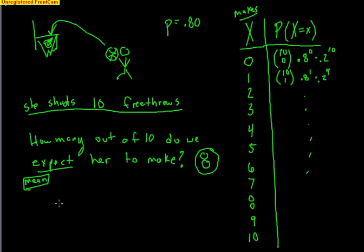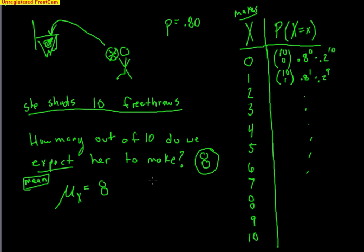The symbol for expected value is mu (μ), which is also our symbol for mean, because an expected value is a lot like a mean. We say the mean of X — where X is how many she's going to make, ranging from 0 to 10. We expect the mean of many, many trials to be 8. The formula for expected value in the binomial model is simply n times p. For Bailey, that's 10 times 0.8, which equals 8.